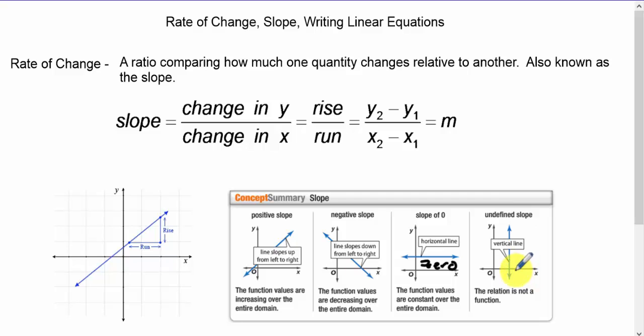This is an undefined slope, but I like saying no slope because the word no, with the n, follows the vertical line. Easy way to remember it.